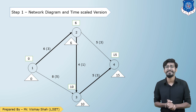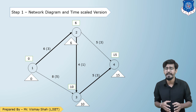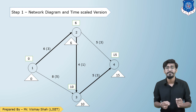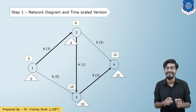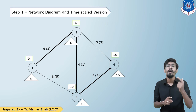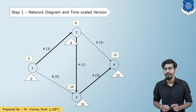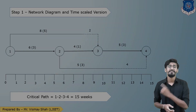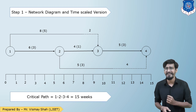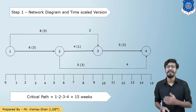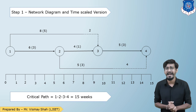Now let us see the time-scaled version. In a time-scale diagram, the critical path is represented by a straight line, and non-critical activities are represented above or below the critical path. The critical path 1-2-3-4 has been represented on a straight line, and activities 1-3 and 2-4 are represented above and below that critical line.